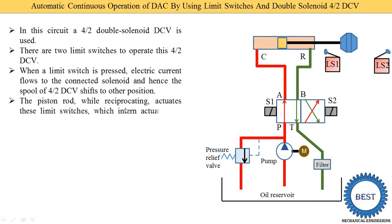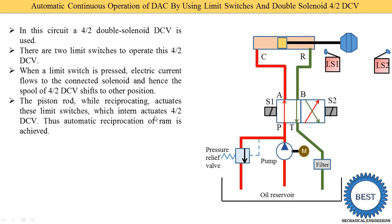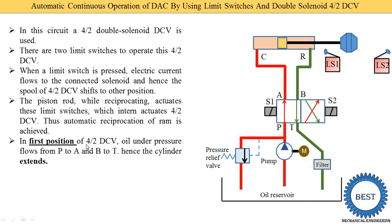As the piston reciprocates, the cam also reciprocates, and this motion actuates the limit switches. When the limit switch is actuated it supplies current to the solenoid, which operates the DCV — thus automatic reciprocation is achieved. We understand this in two positions: the first position and the second position of the 4 by 2 DCV.